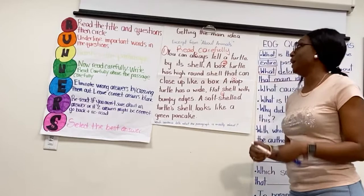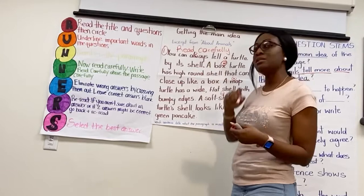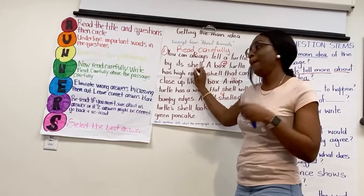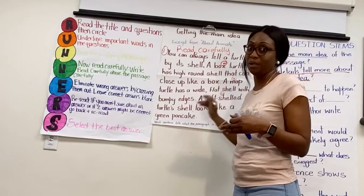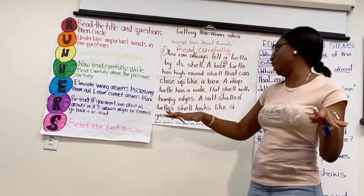Sentence one is the main idea; everything else are details that support the main idea. When looking at my sentences, I'm looking for which sentence tells me mostly what the paragraph is saying. To me, it's sentence number one: you can always tell a turtle by its shell. Why? Because a box turtle has a high round shell, a map turtle has a wide flat shell with bumpy edges, and a soft-shell turtle's shell looks like a green pancake — you can always tell a turtle by its shell.